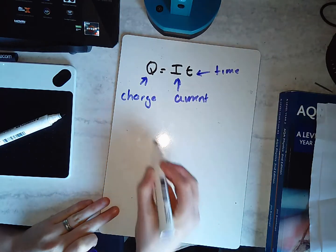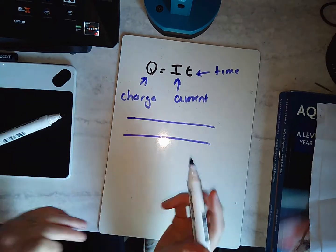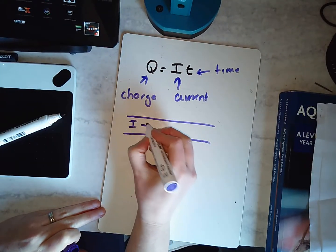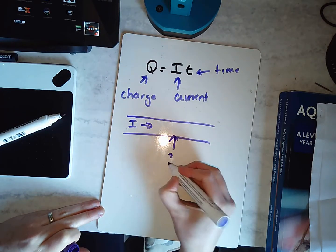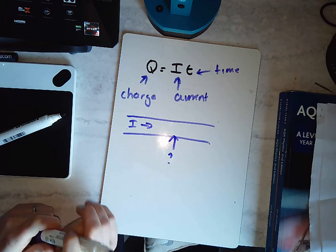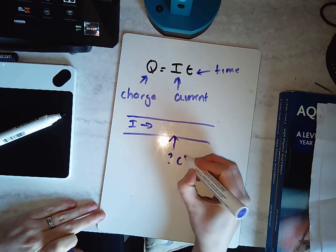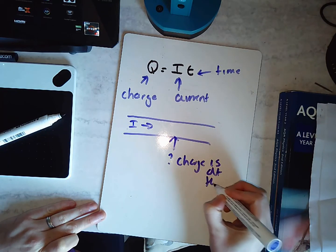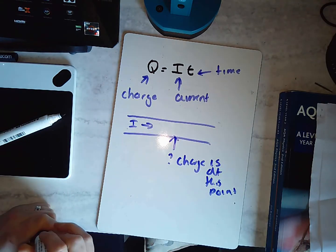So what they're saying here is if I had a wire, and I have my current flowing here, if I was looking at this point here, if I knew how much current was flowing over how long, I could know how much charge is at this point, or has crossed over that point.